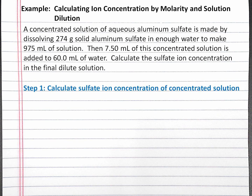Our first step is to calculate the sulfate ion concentration in the concentrated solution. We'll do this using our equation for molarity. Molarity equals moles of solute divided by liters of solution.